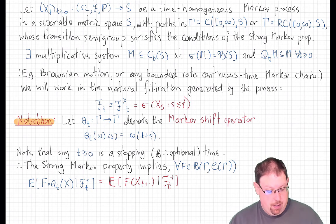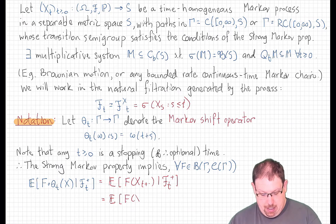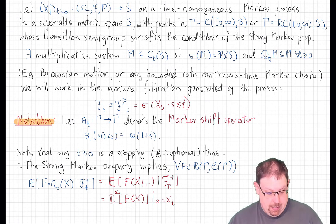The left-hand side of the strong Markov property we proved can be written as the conditional expectation of f at x_{t+·} given F_{t+}. And what the strong Markov property tells us is that this is the same as taking the regular expectation of f at x, not shifted, but started in state x, where this function of x is then evaluated at the random point x_t.